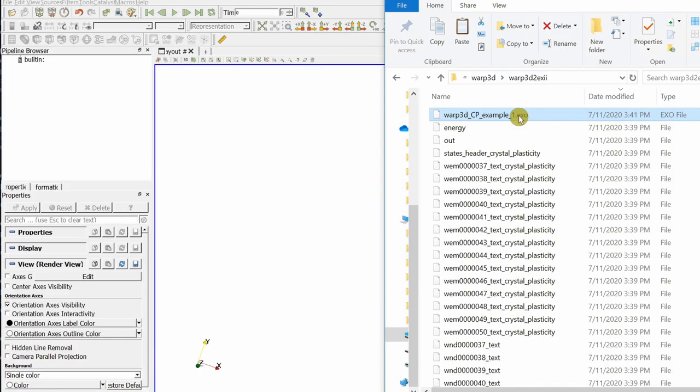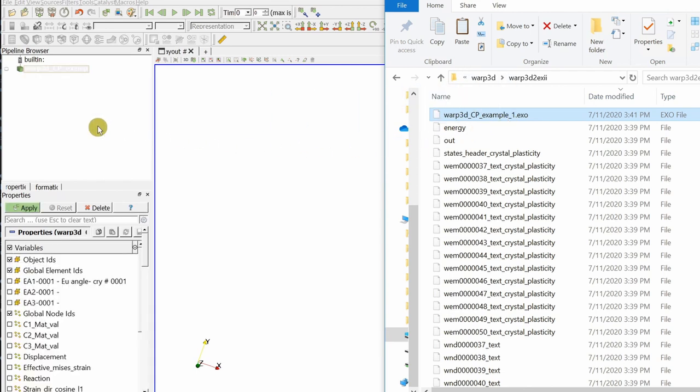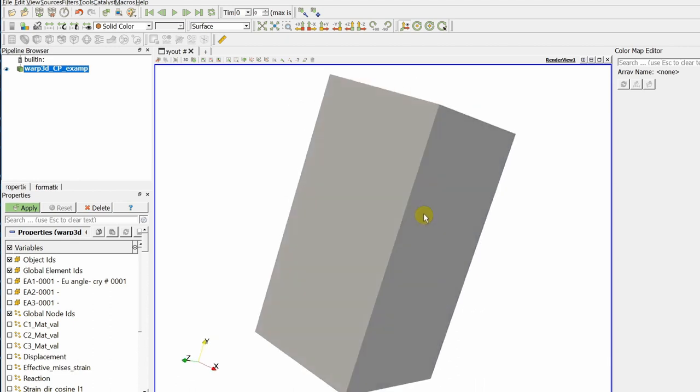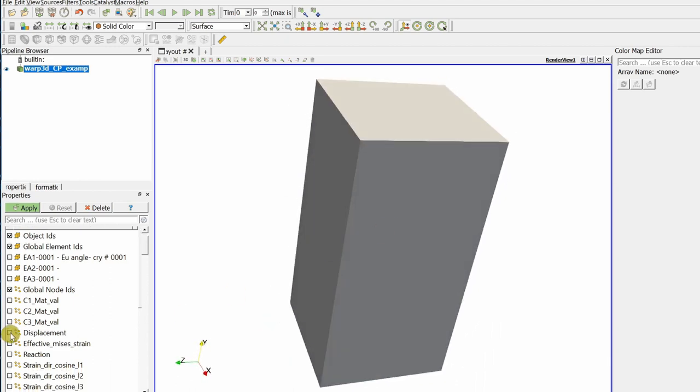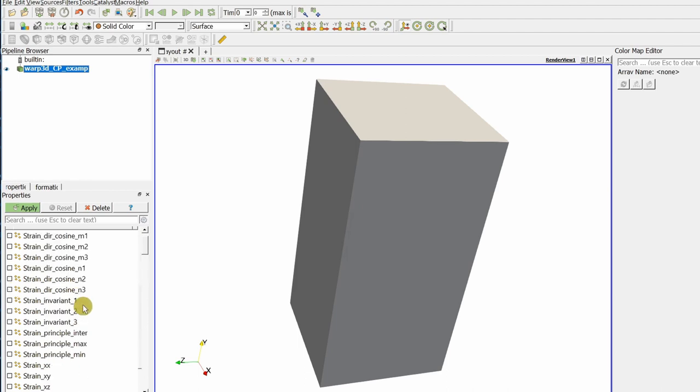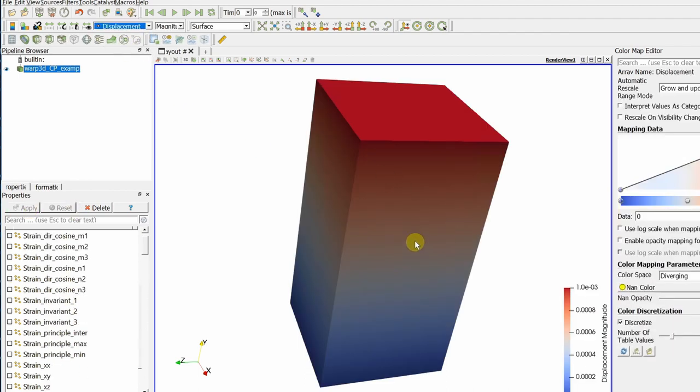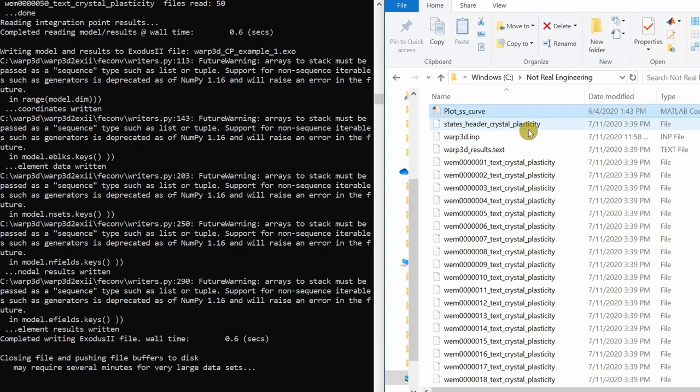This you can visualize in ParaView. Then open ParaView and just drag this file over here. Say apply and you can see our two element model. Whatever you want to visualize, let's say displacement or reaction forces, everything you can load it into your model. And then you can choose displacement from here.